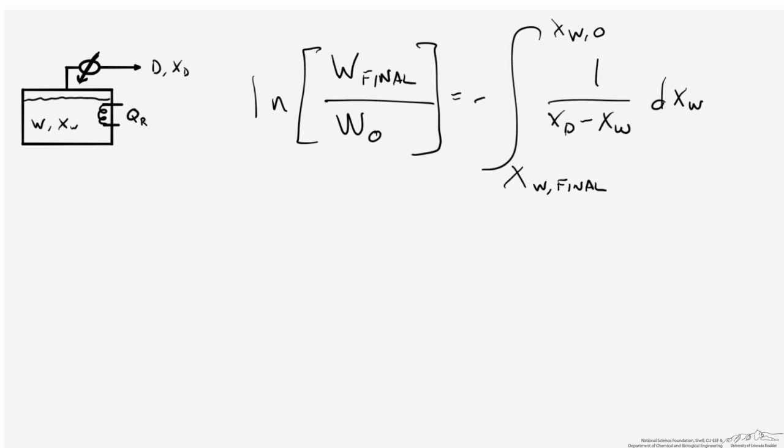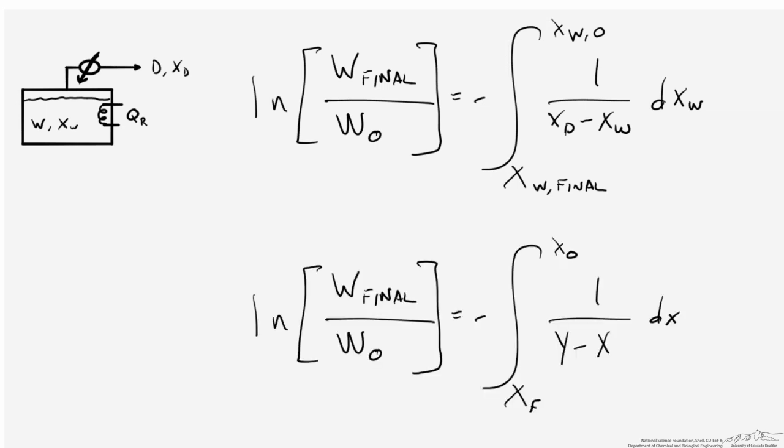This is a general form of the Rayleigh equation relating the liquid composition to the distillate composition. Here we have a special case where the distillate is actually in equilibrium with the liquid in the pot still at any given time, because this whole process is driven by vapor-liquid equilibrium. So in this special case, we can replace the composition of the distillate with the composition of the vapor phase, and replace the composition of the liquid in the pot still with an instantaneous composition associated with the liquid phase. These x and y compositions are related through vapor-liquid equilibrium.